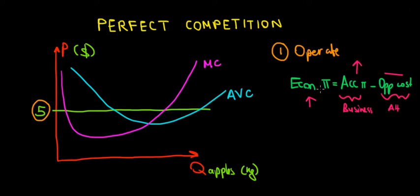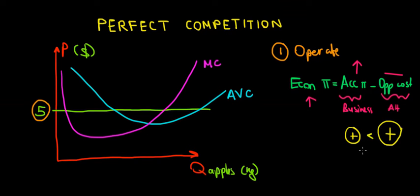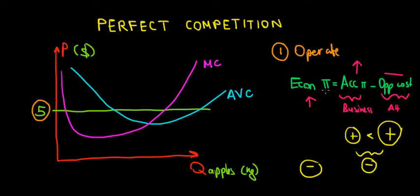What happens if we have a positive accounting profit but a negative economic profit? That would mean our opportunity cost is even higher than our accounting profit, and taking the difference gives a negative result. Negative economic profit doesn't mean we're losing money in our business — it just means we're not doing the best we can with the dollars we have, so we should be operating in a different market.